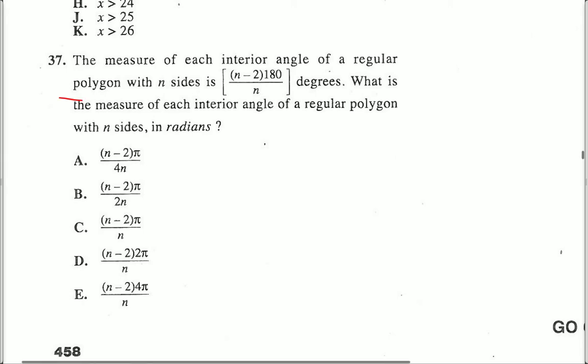Number 37. The measure of each interior angle of a regular polygon with n sides is (n minus 2) times 180 over n degrees. What is the measure of each interior angle of a regular polygon with n sides in radians?